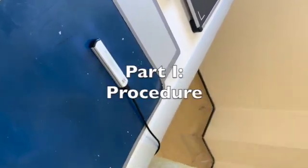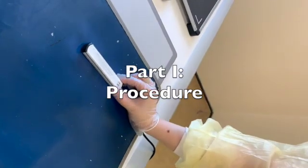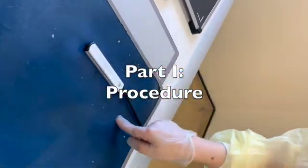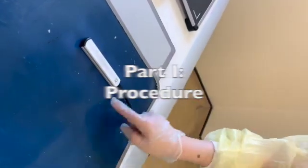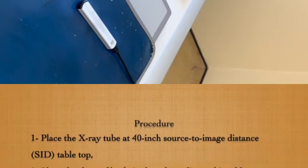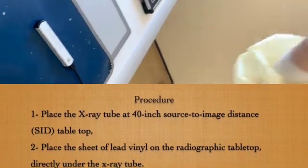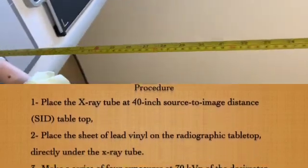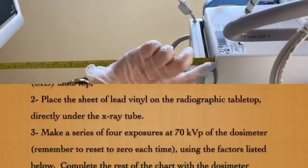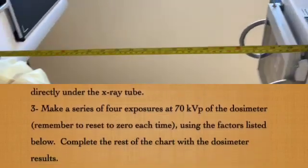What we do first is we set up our dosimeter with the minimum collimation to reduce the scatter as much as possible. Then we make sure the distance is about 40 inches, as you can see here, from the dosimeter.